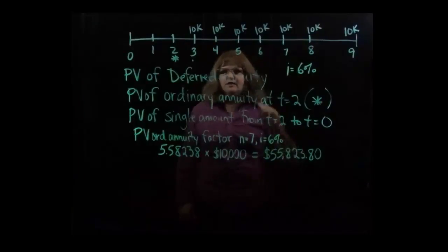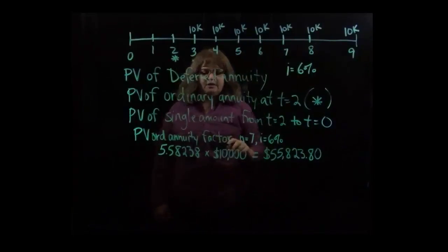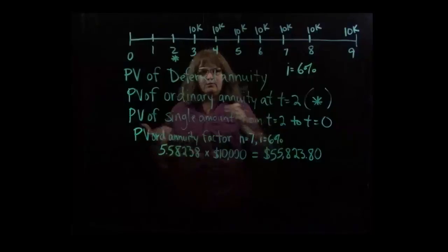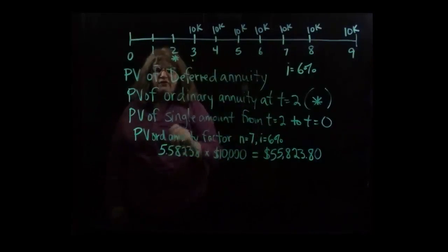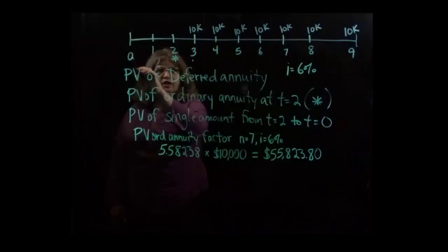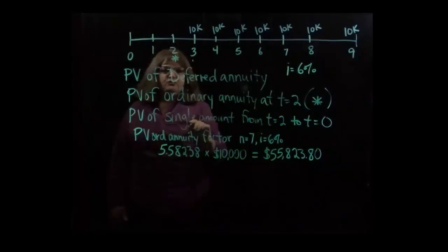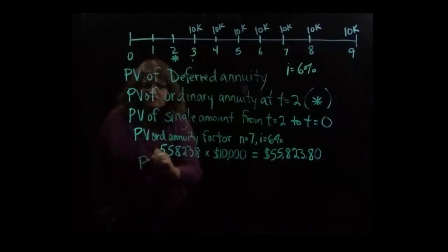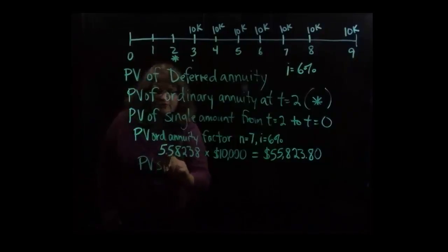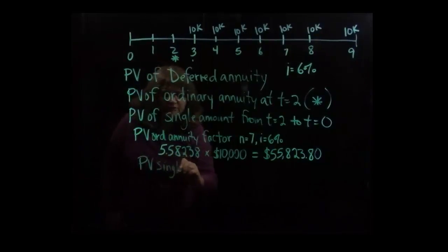That then is the amount that goes in here at time equals two that we're going to then discount back two more periods. In other words, we're trying to figure out how much would we have to have here if we were able to earn six percent interest, that after two years it would equal that amount. So next we're going to look in the present value of a single amount table or a lump sum, sometimes it's called.